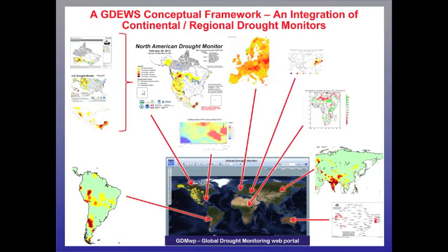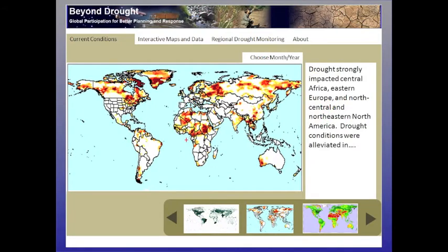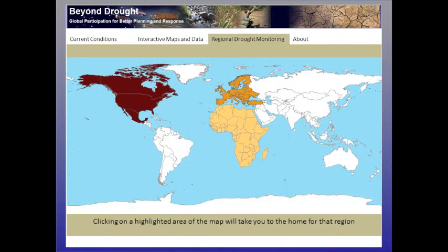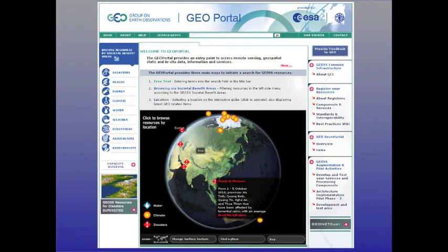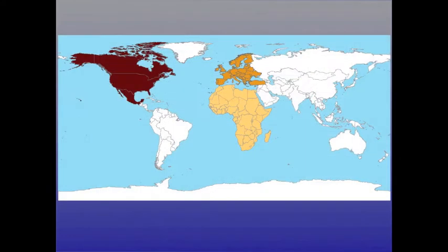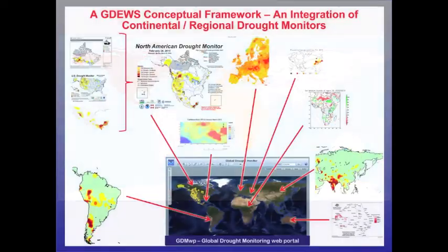Global information developed for the portal will be based centrally, where anyone can get drought information at the global scale or click through for regional or continental scale information, as well as access information at the finest scale a nation has available. This information will also be accessible through the GEO Portal. The current Global Drought Monitor includes coverage for North America, the European Union, and Africa.